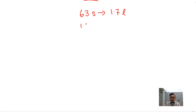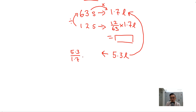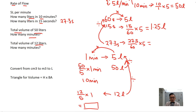And if I want 5.3 liters, how many seconds would that take? That's 5.3 divided by 1.7 times 63, and that gives you the number of seconds. So it's a very useful formula for you to determine your rate of flow, which you will use in your sample questions.